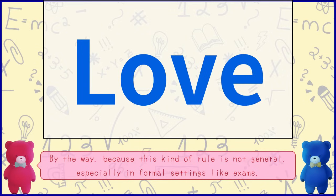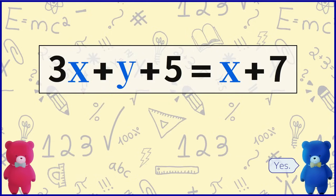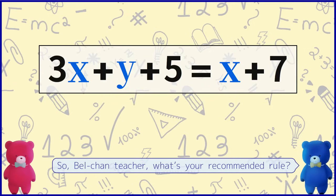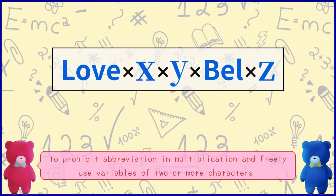By the way, because this kind of rule is not general, especially in formal settings like exams, it's safer to use single character variables, right? Yes. So, Bulchan teacher, what's your recommended rule? My recommendation is to prohibit abbreviation in multiplication and freely use variables of two or more characters.